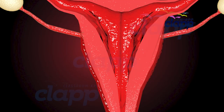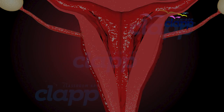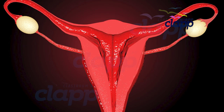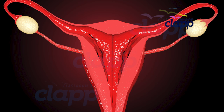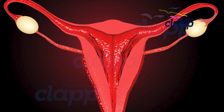The uterus has a thick wall made of three tissues: an outer peritoneal covering called parametrium, a middle layer of smooth muscles called myometrium, and an inner glandular layer called endometrium. The myometrium is involved in uterine contractions, and the endometrium undergoes cyclic changes during the menstrual cycle.